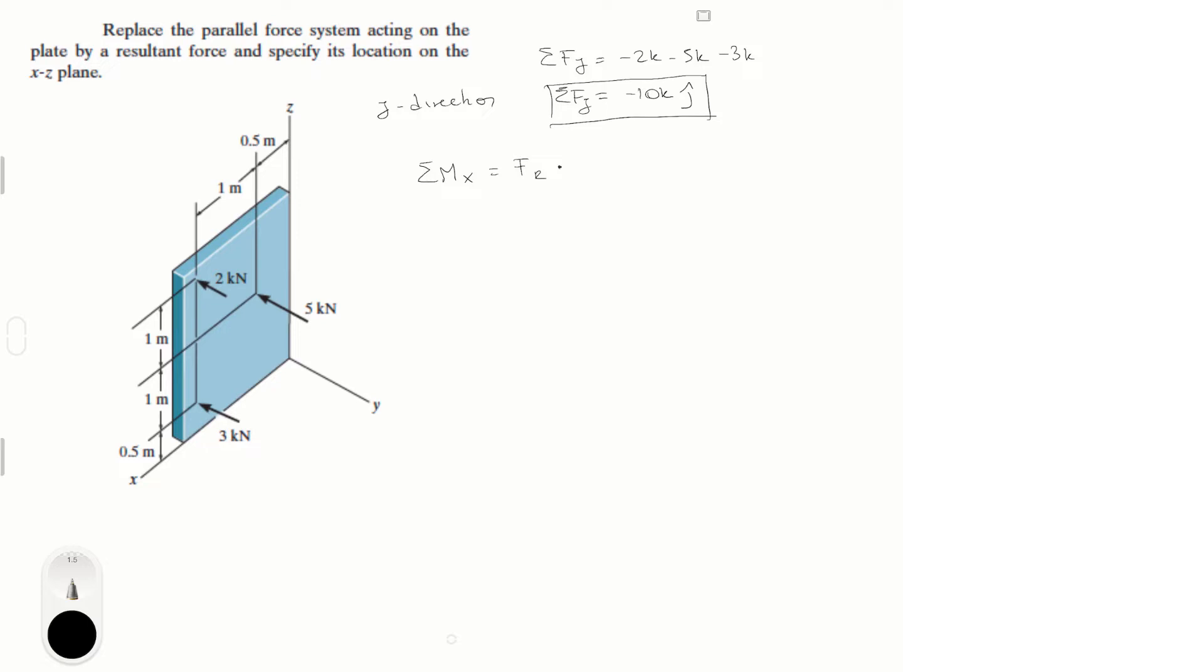times the distance in the z direction. Same thing goes for the sum of the moments in the z, which is going to give you the resultant force times a distance x, assuming that the resultant force is in the j.